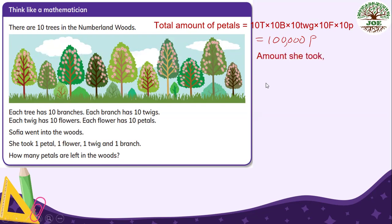And second step is, amount she took from the woods. And she took one petal, it's one. And one flower has 10 petals, it's 10. And one twig, one twig has 10 flowers and 10 petals. So 100 petals. And one branch has 10 twigs. And one twig has 10 flowers and a flower has 10 petals. So altogether, 1,000 petals. So total amount she took is, we have to add them up.